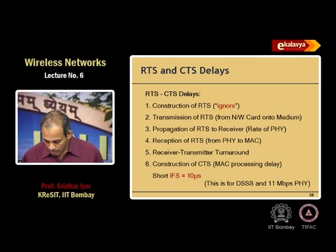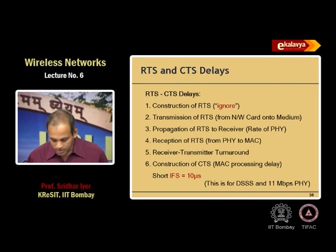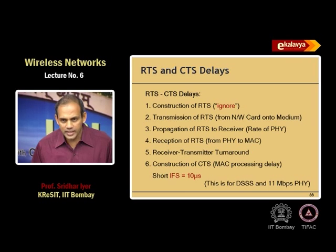DIFS must be greater than SIFS. If DIFS were equal to or less than SIFS, there would be a conflict. Nobody asked why DIFS is 50 microseconds. The SIFS time of 10 microseconds depends on the PHY type — for direct sequence spread spectrum at 11 Mbps it is 10 microseconds. For frequency hopping spread spectrum or OFDM at 54 Mbps, the SIFS time will be different.